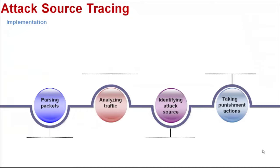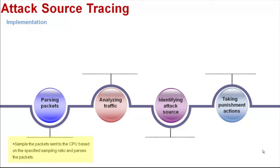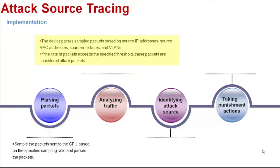Let's see how Attack Source Tracing is implemented. It includes four steps. First, the device samples the packets sent to the CPU based on the specified sampling rate and parses the packets. Second, the device analyzes the sampled packets. By default, the device extracts the source IP addresses, source MAC addresses, source interfaces, and VLANs of packets. If the rate of packets exceeds the specified threshold, these packets are considered attack packets.